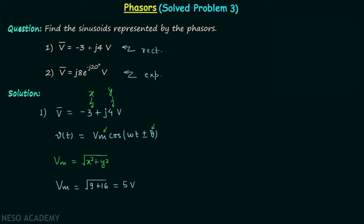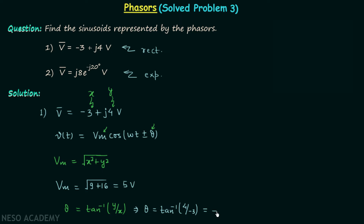The phase angle θ = tan⁻¹(y/x). In our case y = 4 and x = -3, so θ = tan⁻¹(4 / -3). When solved, this gives θ = -53.14 degrees.